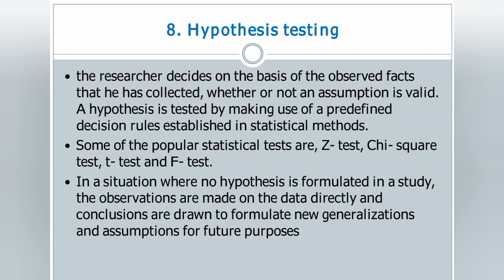There are two types of hypothesis: null hypothesis and alternate hypothesis. Null hypothesis means there is no difference between two variables; alternate hypothesis means there is some difference. For an assumption to be valid, the null hypothesis must be rejected and the alternate hypothesis must be accepted. Some popular statistical tests are Z-test, chi-square test, P-test and F-test. These are used to perform hypothesis testing.